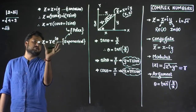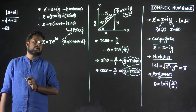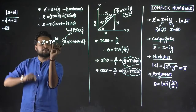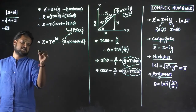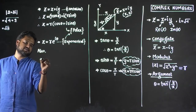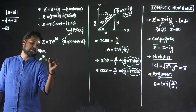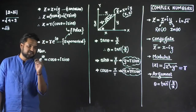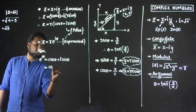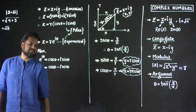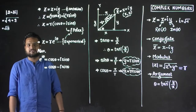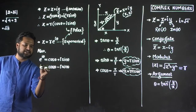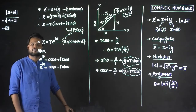Now if I compare z equals r(cos theta plus i sin theta) with z equals r e raised to i theta, I realize that e raised to i theta equals cos theta plus i sin theta. So I can write: e raised to i theta is nothing but cos theta plus i sin theta. Now if this is my complex number, I can write its conjugate. If cos theta plus i sin theta is my complex number, then cos theta minus i sin theta is the conjugate. Changing the sign of i on the left-hand side as well gives e raised to minus i theta.